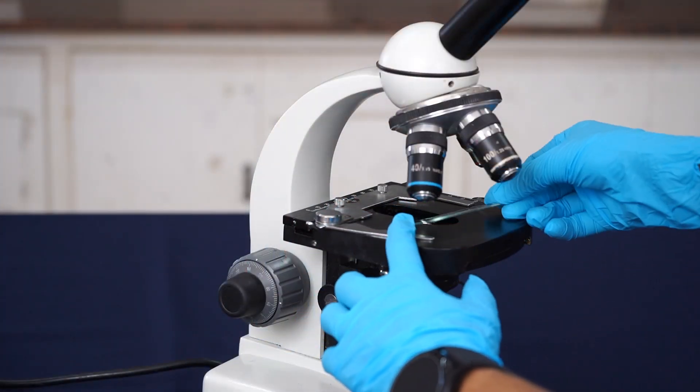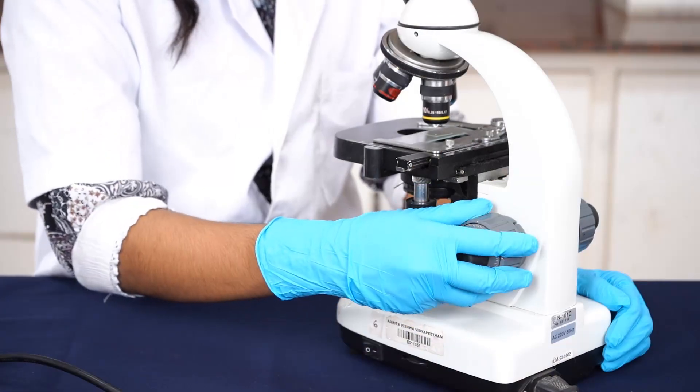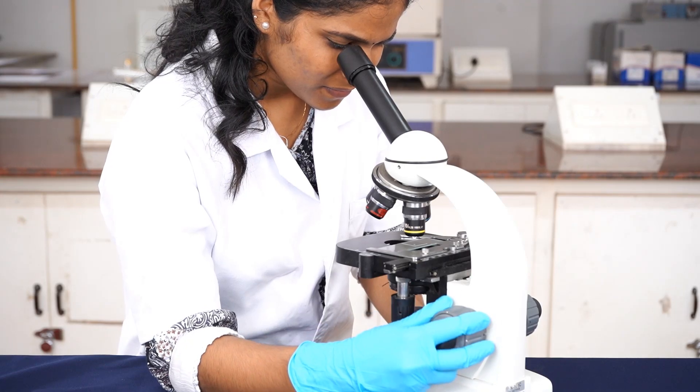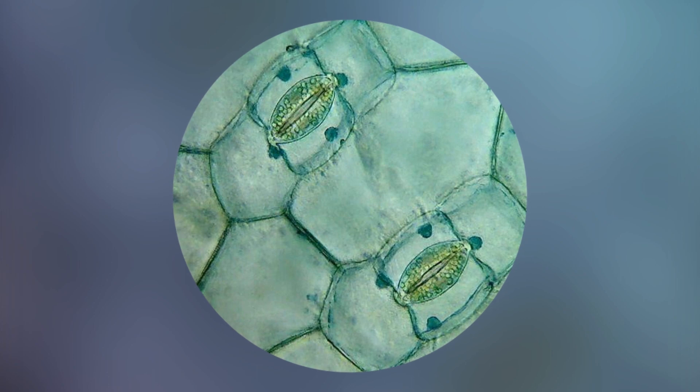Place the glass slide onto the stage of compound microscope. Observe the peel under the low power of the microscope and note the different types of cells.